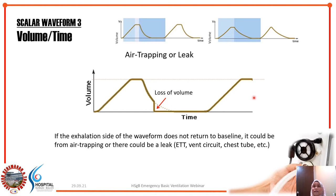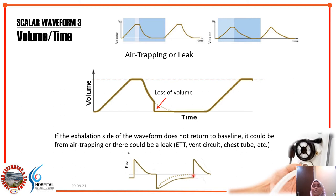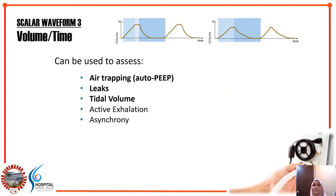To tell the difference between air trapping and leaking, look back at your flow waveform. If the flow waveform doesn't return to baseline, it's air trapping. If the flow waveform is normal but volume doesn't return, the result is a leak. Once you know it's leaking, find the cause: it could be a leaking ETT cuff — inflate or change it — or air leaking into the pleural cavity as in pneumothorax, which needs to be treated.